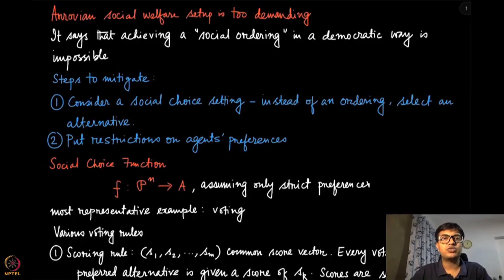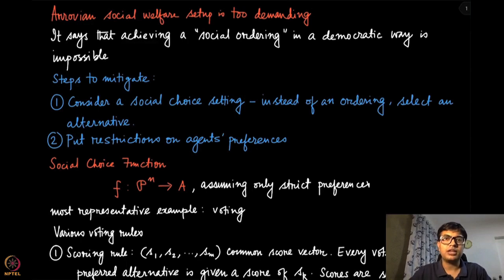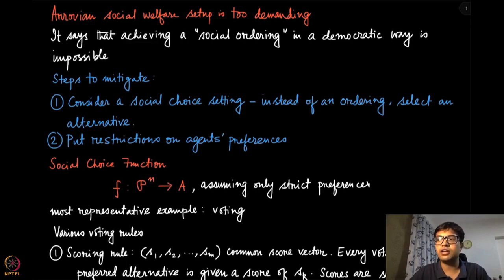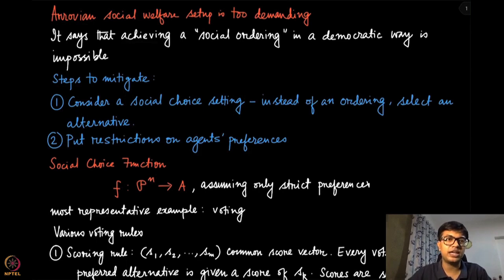One can argue that the Arrovian social welfare setup is too demanding, and that is one of the reasons why we got the impossibility result due to Arrow. In the Arrovian social welfare setup, we are looking at a complete ordering over the alternatives as an outcome of that welfare function. The summary of the Arrovian impossibility result is: having a social ordering — where f of r takes as input all the preference orders over all individuals and gives out one complete ordering — in a democratic way is impossible.